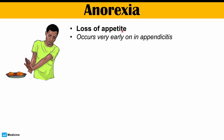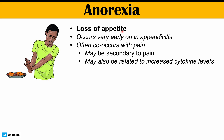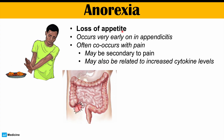A lot of times, patients will just start off — perhaps it's dinner time — and they will just feel like they don't feel like eating right now. That can be the first finding in appendicitis. This often will co-occur with the pain, so because they occur quite close to each other, a patient may describe that abdominal pain and then just not having an appetite. That pain can actually exacerbate their loss of appetite, or it may also be related to increased cytokine levels — immune system chemicals.